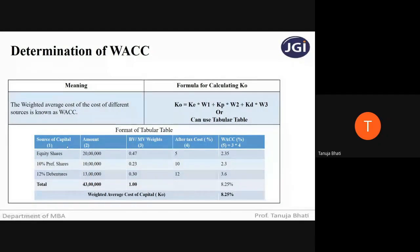Just to check understanding: which sources of capital will you write in column number 1? Only those sources through which the company has raised finance. Though we know different sources like equity, preference, debentures, term loans, retained earnings — you will specify in your answer only those sources through which the company has actually raised finance. If the company has raised finance only through equity and preference, you take only those two.